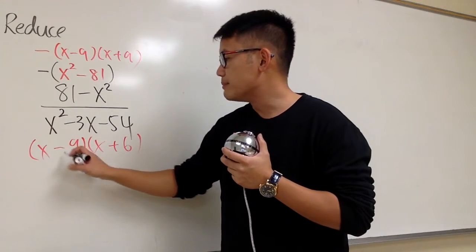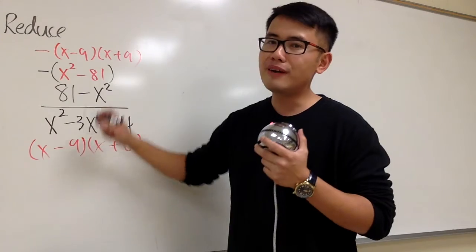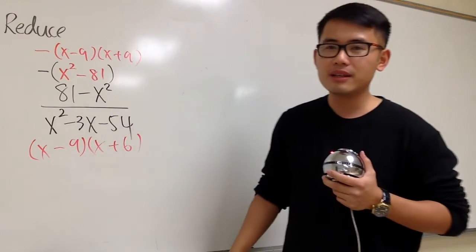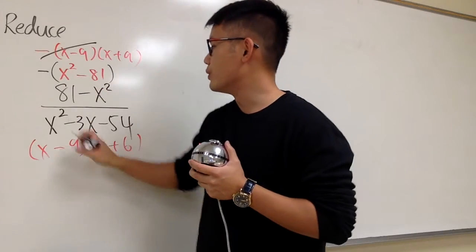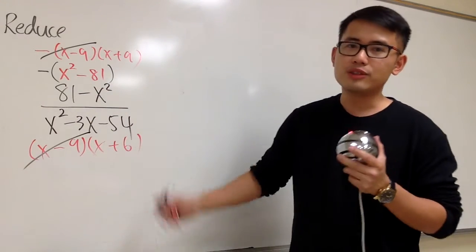And now, we see that the x minus 9, it's a common factor on the top and on the bottom. And we can cancel them out. This is what we do to reduce the rational expression.